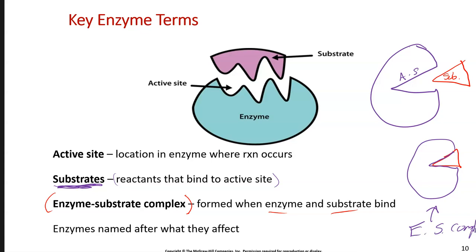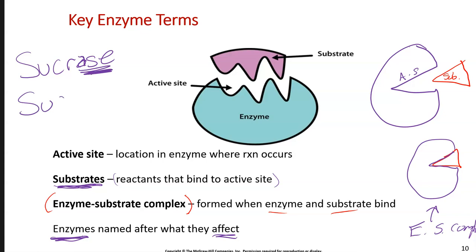Enzymes are typically named after what they affect. For instance, if you had an enzyme called sucrase — you see it ends in A-S-E — that most likely will help to break apart sucrose, which is a carbohydrate we talked about before in class. So enzymes are going to be named after what they affect.